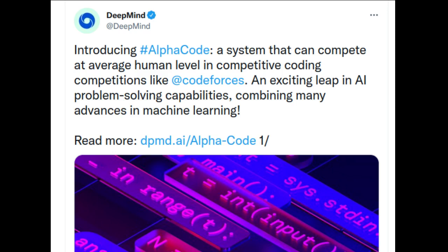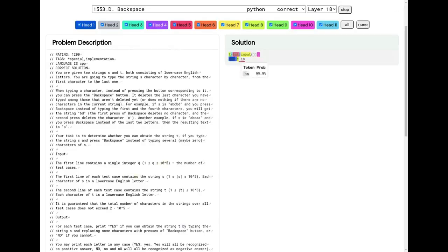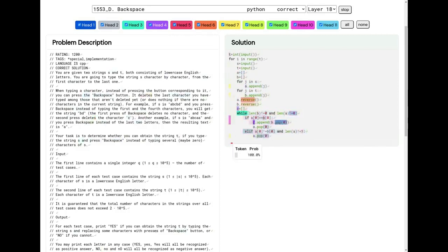AlphaCode achieved an estimated rank within the top 54 percent of participants in programming competitions by solving new problems that require a combination of critical thinking, logic, algorithms, coding, and natural language understanding. AlphaCode uses transformer-based language models to generate code at an unprecedented scale and then smartly filters to a small set of promising programs.